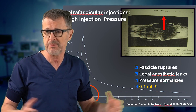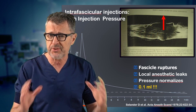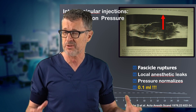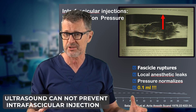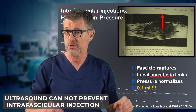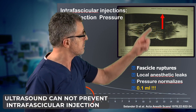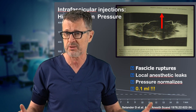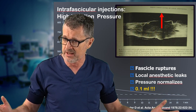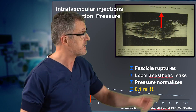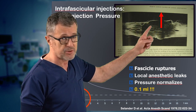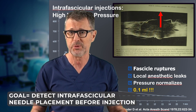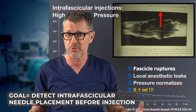At that point in time, the damage is already done. So the theory that you can use ultrasound to detect an interfascicular injection goes out the window, because as little as 0.1 milliliter is necessary to rupture the fascicle — and then it's already too late. So detecting the pressure before the rupture occurs is what we're trying to do with injection pressure monitoring.